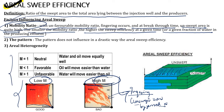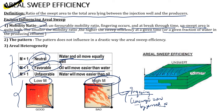M equals 1 is the neutral case where oil and water move equally. M less than 1 is favorable — oil moves easier than water. When M is greater than 1 it is unfavorable and water moves easier than oil.